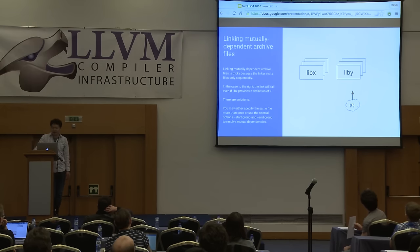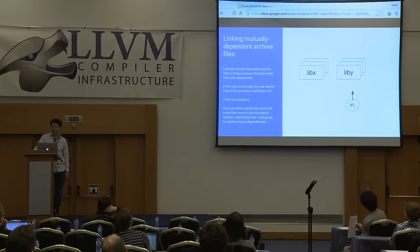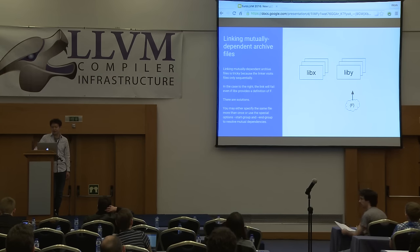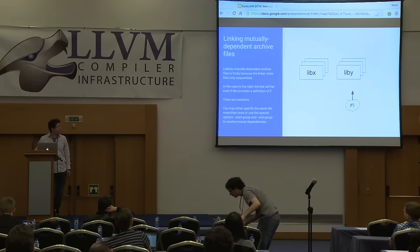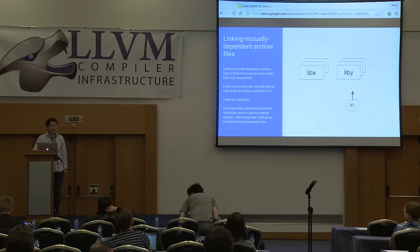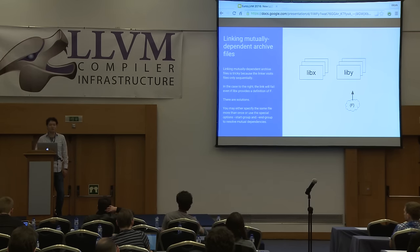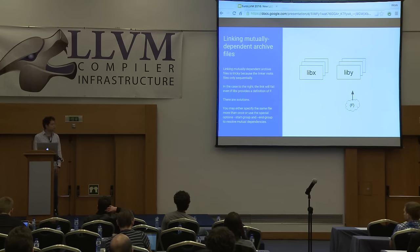Here is the problem with traditional Unix linker semantics. The traditional linker cannot handle mutually dependent archive files gracefully. In this case, an undefined symbol remains at the end of the linking process. Even if the symbol exists in a library that was already visited, the linker cannot go back to read it, because the process is completely sequential. Once it has passed over a file, it's too late to revisit it.